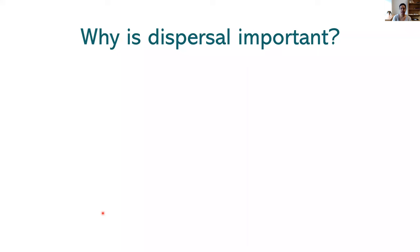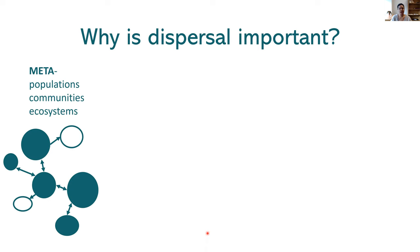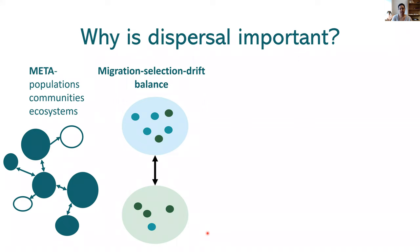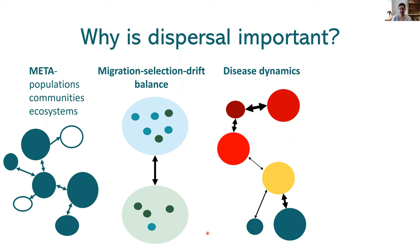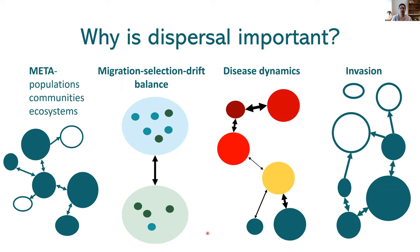Aside from being a major life history event in its own right, dispersal is important because it influences a wide variety of ecological and evolutionary patterns and processes. Dispersal is a core concept in meta-populations, meta-communities, and meta-ecosystems. It is central to migration-selection-drift balance. Dispersal drives disease spread dynamics and is central to biological invasions, so our understanding of dispersal has knock-on effects on our understanding of a wide variety of ecological and evolutionary dynamics.